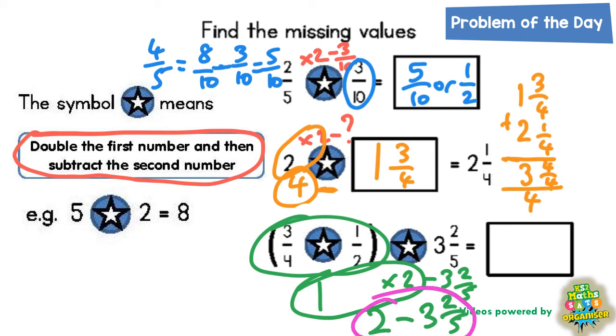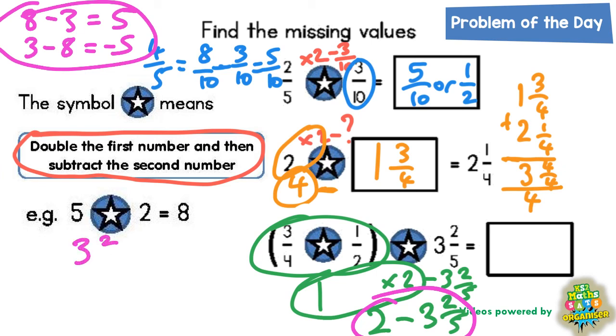Now remember if 8 take away 3 is 5, if you switch that round 3 take away 8 is going to be minus 5. And we can use that sort of fact here. So instead of doing 2 take away 3 and 2 fifths, I might do 3 and 2 fifths take away 2 and switch it round.